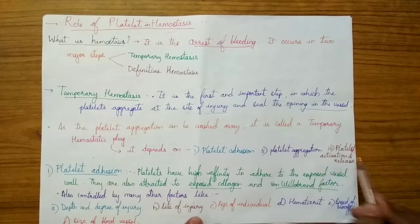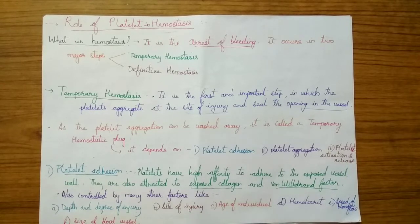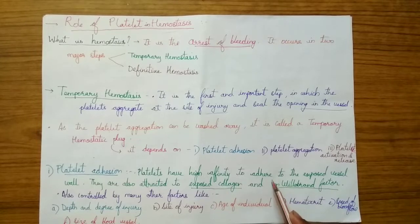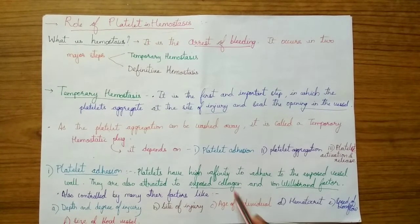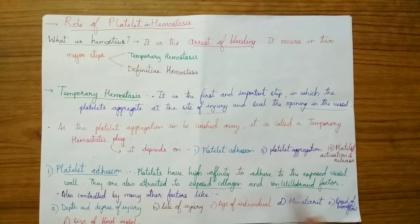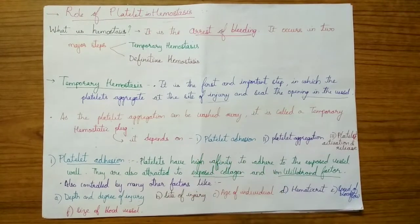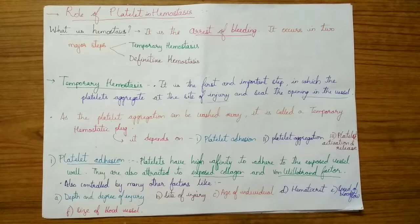Temporary hemostasis depends on platelet adhesion, platelet aggregation, and platelet activation and release. Platelet adhesion means adhering or sticking to something — platelets have a high affinity to adhere to the exposed vessel wall, mainly attracted by exposed collagen and von Willebrand factor. These two are the main factors which attract platelets towards the exposed vessel wall. Adhesion is also controlled by the degree or depth of injury: more depth means more platelets are involved.